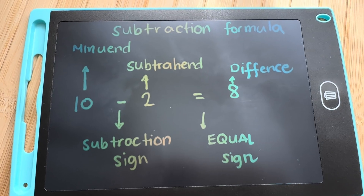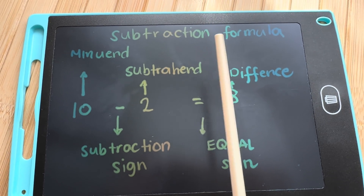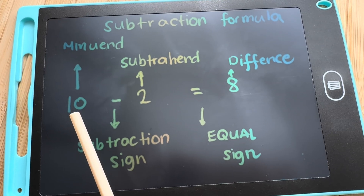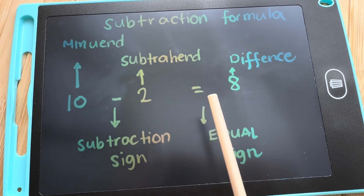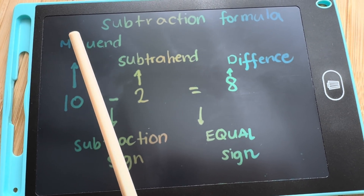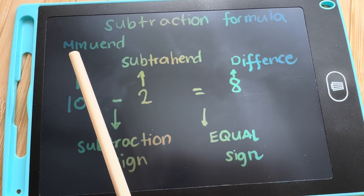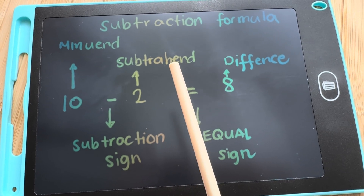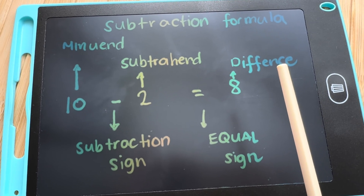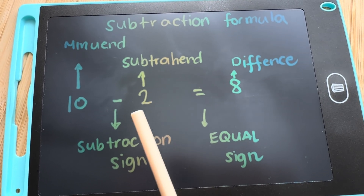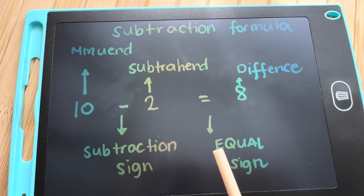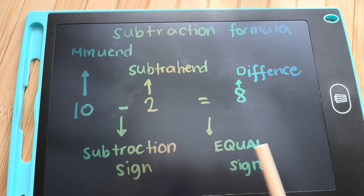And now, let's try to check out the subtraction formula. 10 minus 2 is equals to 8, wherein 10 is the minuend and 2 is the subtrahend and 8 is the difference. Here is the subtraction sign, and here is the equals sign.